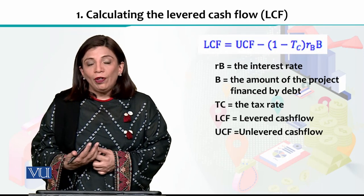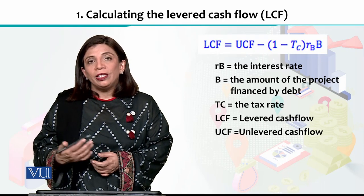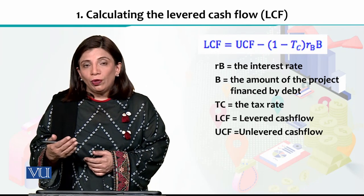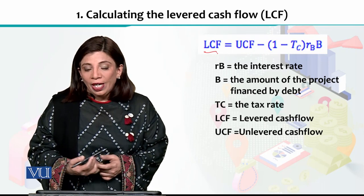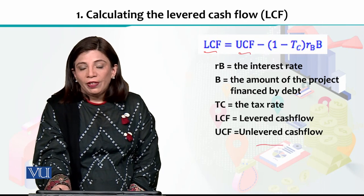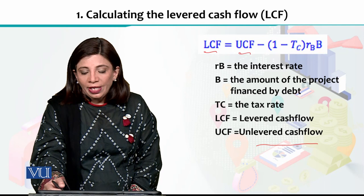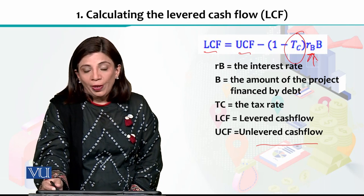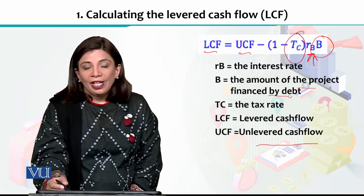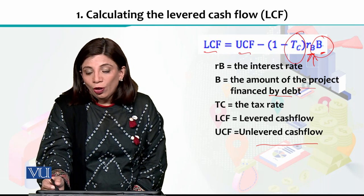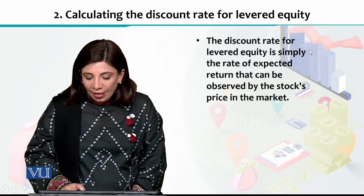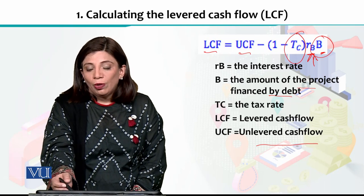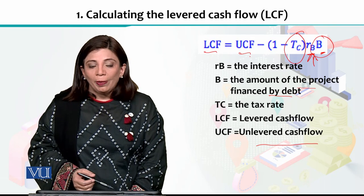Looking at the formula, this is a three-step process to find the value. First, you calculate the levered cash flow. The formula is: Levered Cash Flow equals UCF (Unlevered Cash Flow) minus (1 - TC) multiplied by r_B multiplied by B. Here, TC is the tax rate, r_B is the interest rate you have to pay, and capital B is the amount of the project financed by debt. You multiply the interest rate by the debt amount, then multiply by (1 - TC), and subtract from UCF to get the levered cash flow.